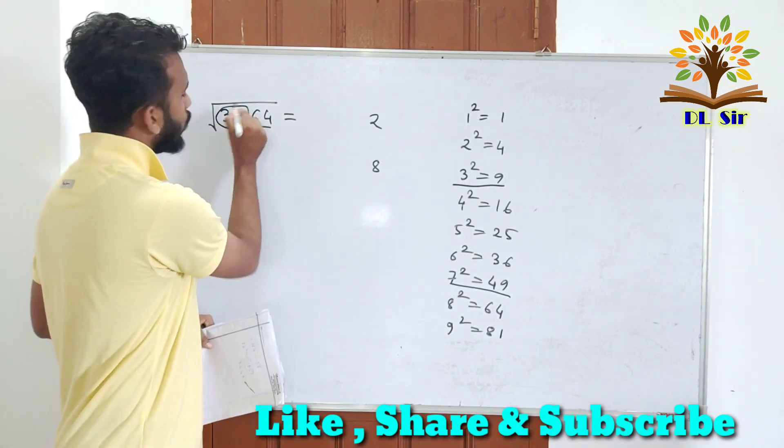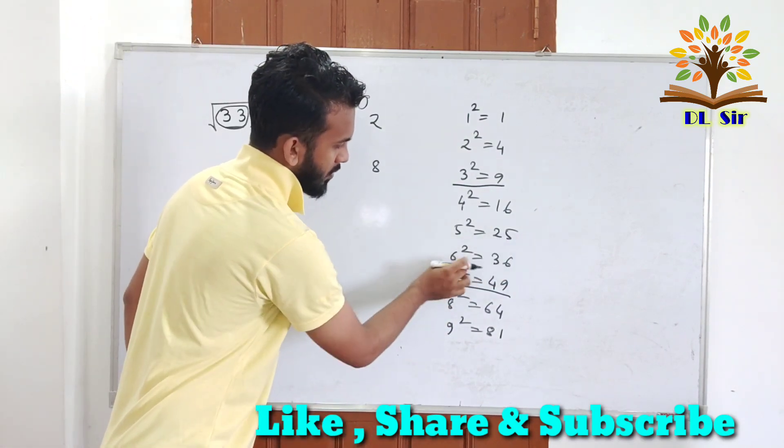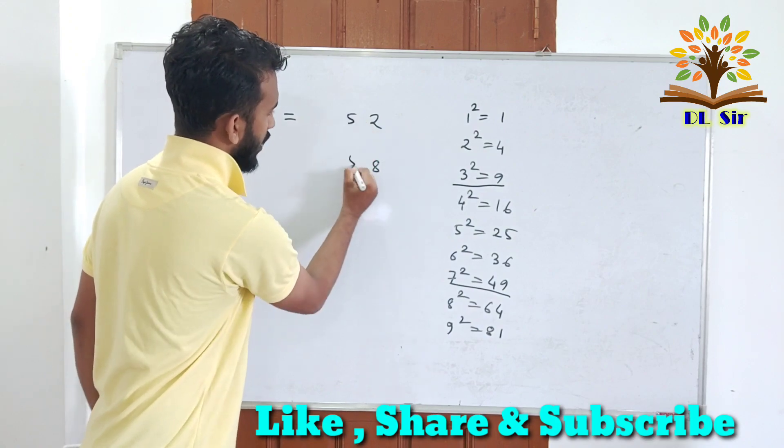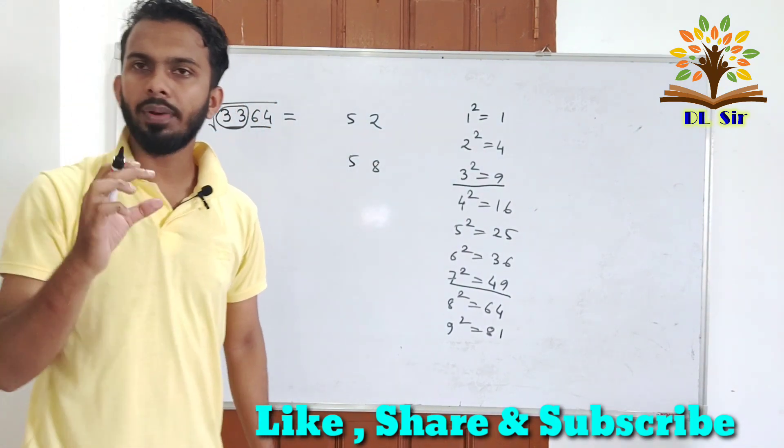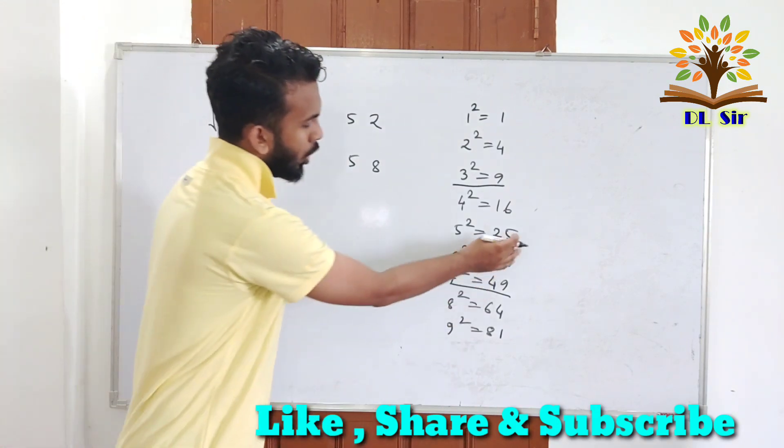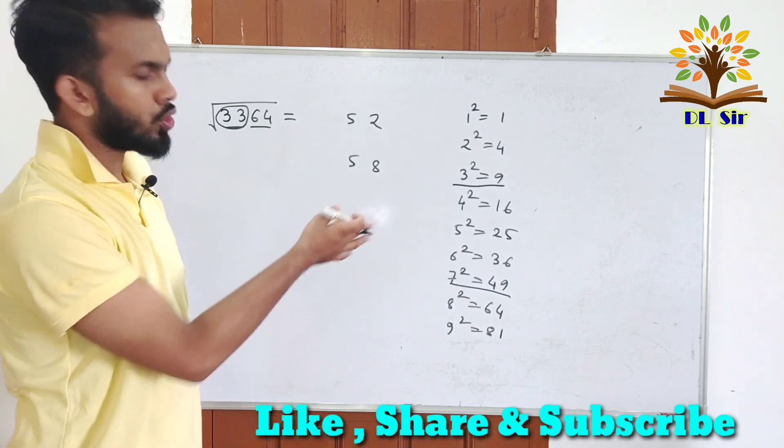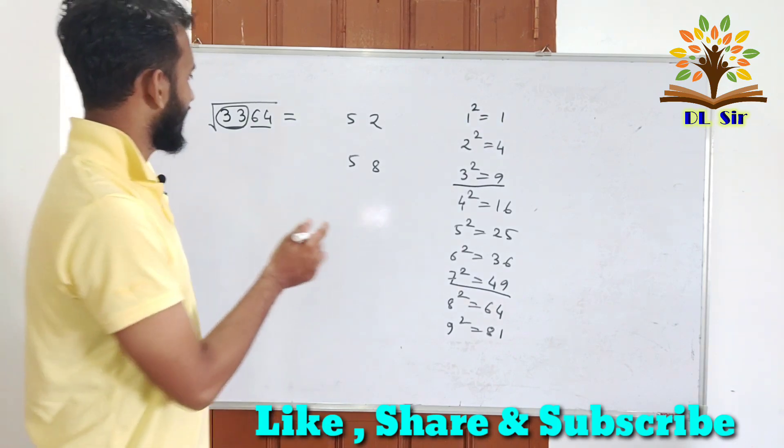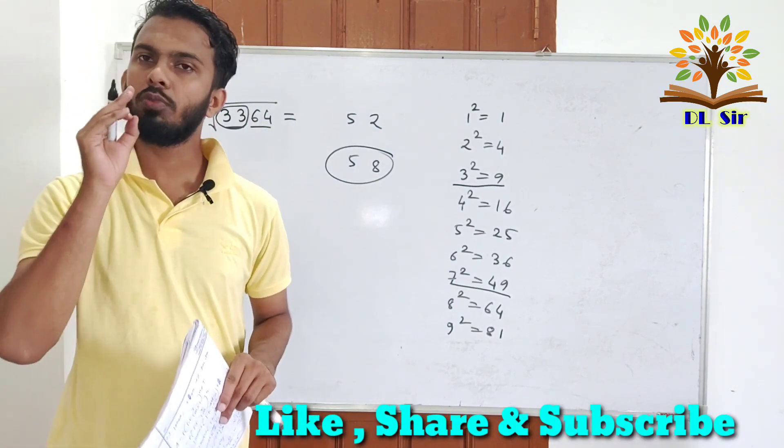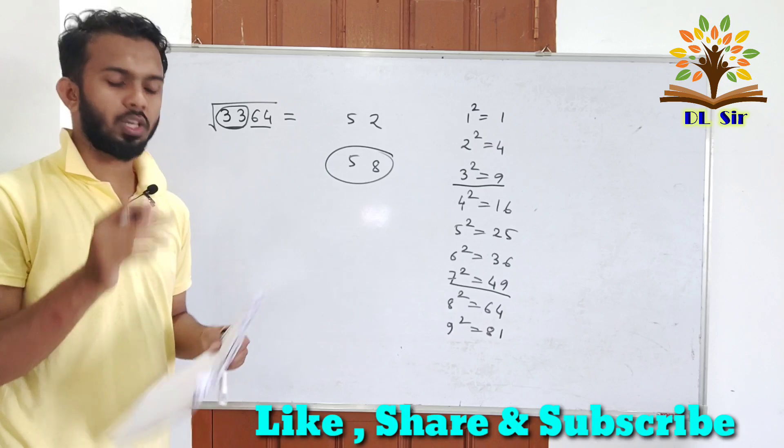Next 33, how many square is? 5 or 6. 5 square 25, 6 square 36. We have to write 5 or 6. 33 is between 25 and 36. That means 58 square.